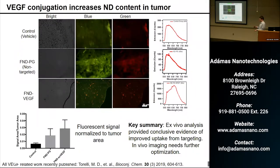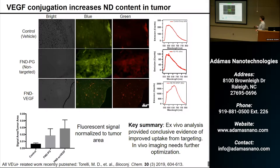The IVIS in vivo imaging of these targeted examples was similar to the EPR-based approach and still needs optimization. However, the ex vivo tissue analysis is pretty unmistakable. The control shows no FNDs administered; a second condition shows FNDs without VEGF; and the third shows FNDs with VEGF administered. It's very obvious that the diamonds accumulate in the tissue when targeted with VEGF. Normalizing to tumor area, the fluorescent signal is clearly higher in the VEGF-functionalized diamond condition. This work was published in Bioconjugate Chemistry.